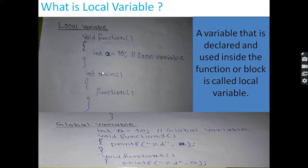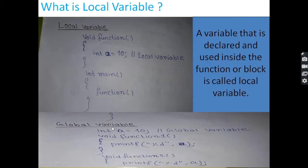Local variables need to be initialized before use. If int a equal to 10 is declared outside the function, as shown where the variable is declared outside the function, that is not a local variable. A local variable is always declared within or inside the function or block. In this code, variable a can only be accessed within the scope of its function — using it in the main function will give an error.